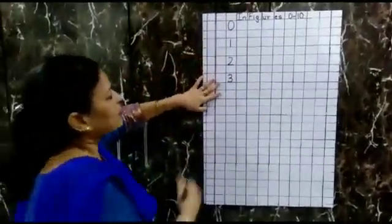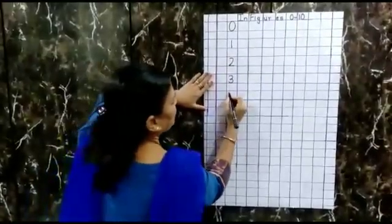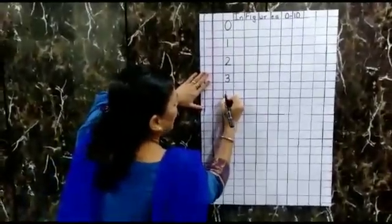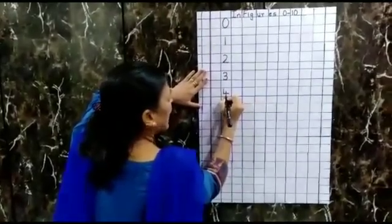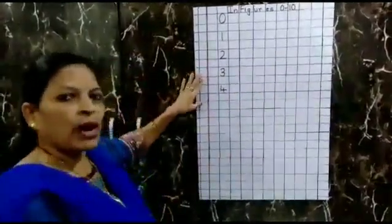Now after 3, what number comes? 4. Very good. Draw a standing line and a slipping line, and in the middle a standing line. That makes number 4.